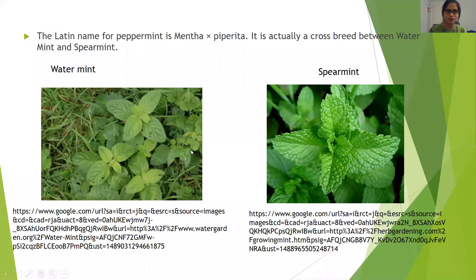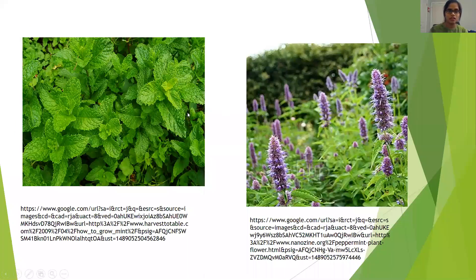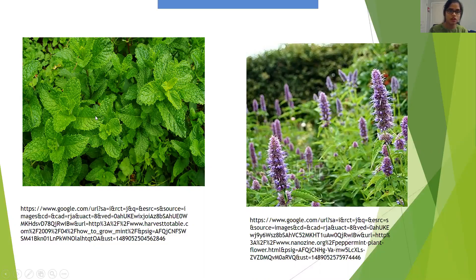This is what a water mint plant looks like and this is what a spearmint plant looks like. This picture shows the peppermint plant. The leaves of the peppermint plant are similar to the leaves of the spearmint plant. The veins in these leaves have a branched structure, which is a visual characteristic of a dicot. Mentha piperita is a flowering plant which produces flowers that are purple in color, as shown in this picture.